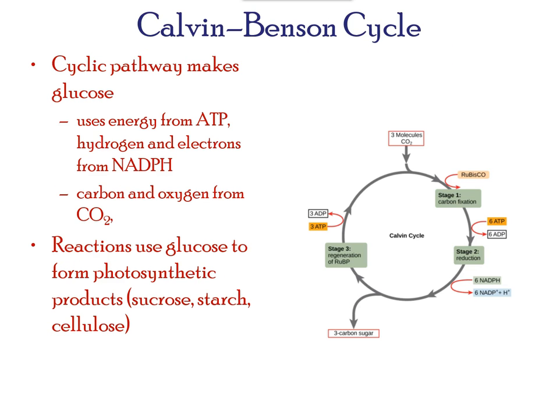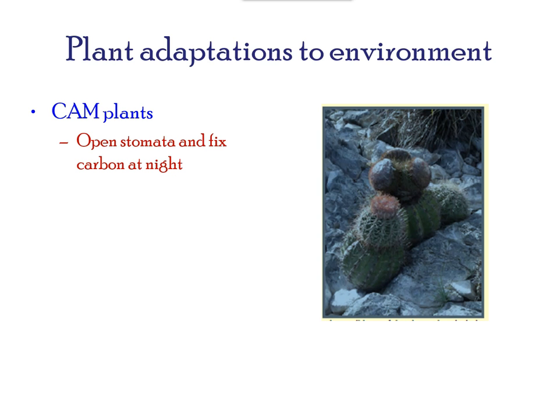Now, there are some plants present in extreme conditions, such as lack of water or growing in hot conditions. These plants have an alternative pathway called the CAM pathway. In these alternative pathways, they are able to utilize carbon dioxide at night. Since these plants grow in hot conditions, they keep their openings called stomata closed during the daylight hours.